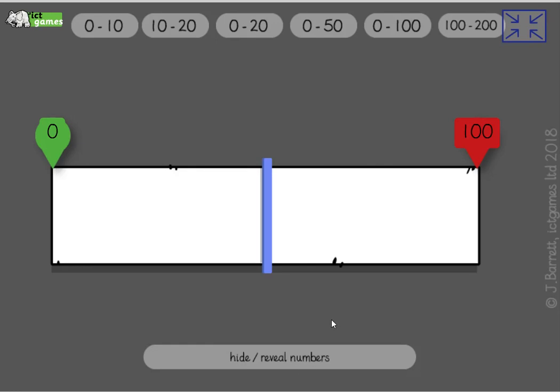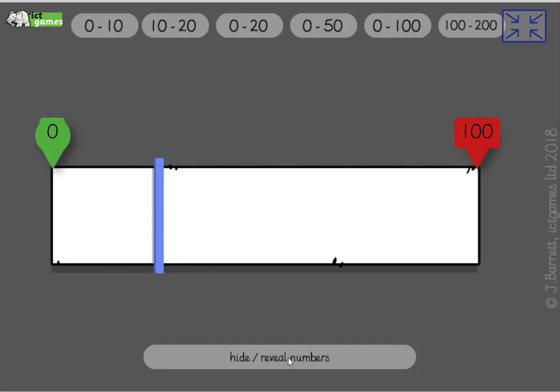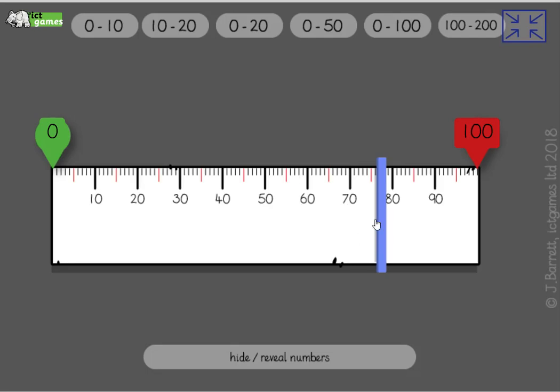And now where would 25 be? This is 50. That's 0. Yeah, 25 is halfway between 0 and 50, so about there. I'm not far off. If that's 25, I remember that was 50. Where would 75 be? That's right, it's going to be halfway between 50 and 100, so it should be about there. Not too far off.